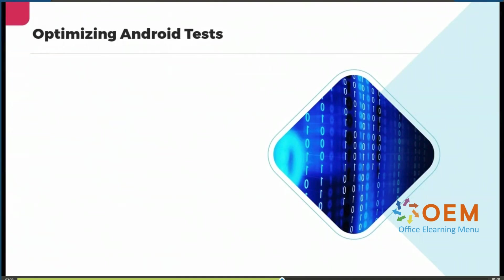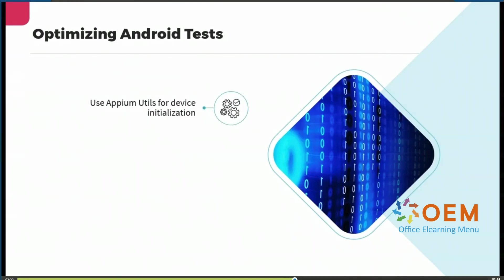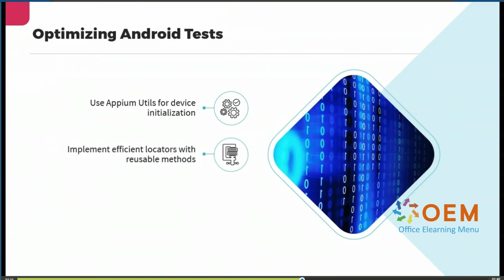How can we optimize our Android tests for better performance and scalability? We can start by using APM utils for device initialization. After that, we can implement efficient locators with reusable methods, and then handle permissions and alerts using a centralized mechanism.